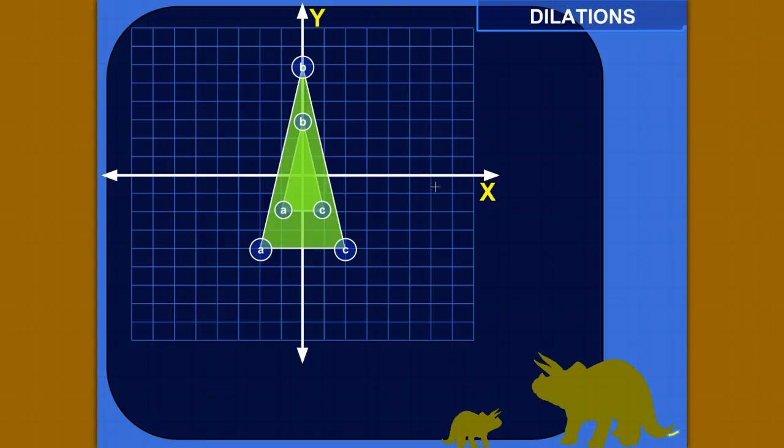Hey, so a dilation is a kind of transformation of a shape where the original shape, let's say a triangle, this little triangle here, is multiplied by a scale factor to make it, in this case, bigger. You can also have dilations that make shapes smaller, but the main point is they keep the same shape and they're just made bigger or smaller.